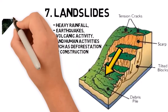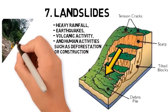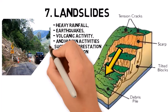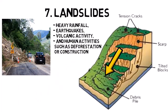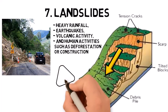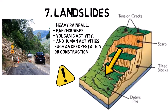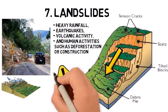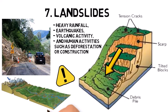Landslides can destroy buildings, roads, and other infrastructure, and they can cause fatalities, particularly if they occur suddenly and without warning. In mountainous regions, landslides can dam rivers, leading to floods or the formation of lakes that may later burst and cause downstream flooding.